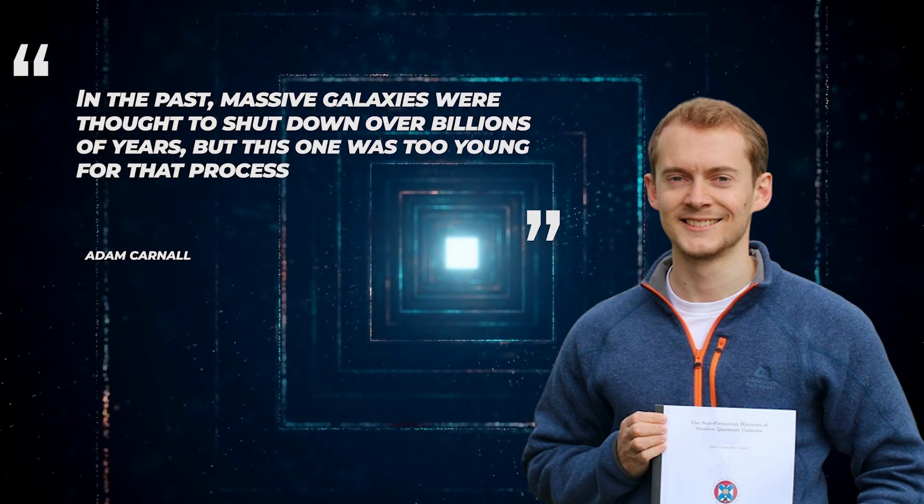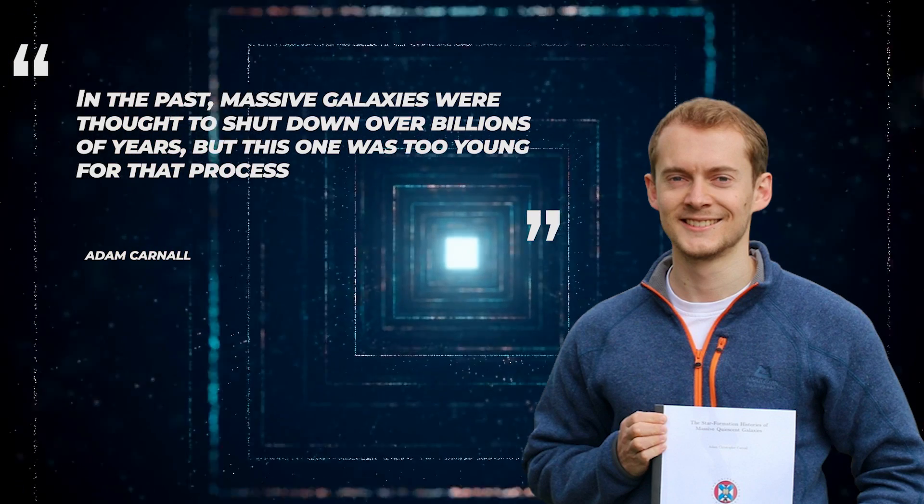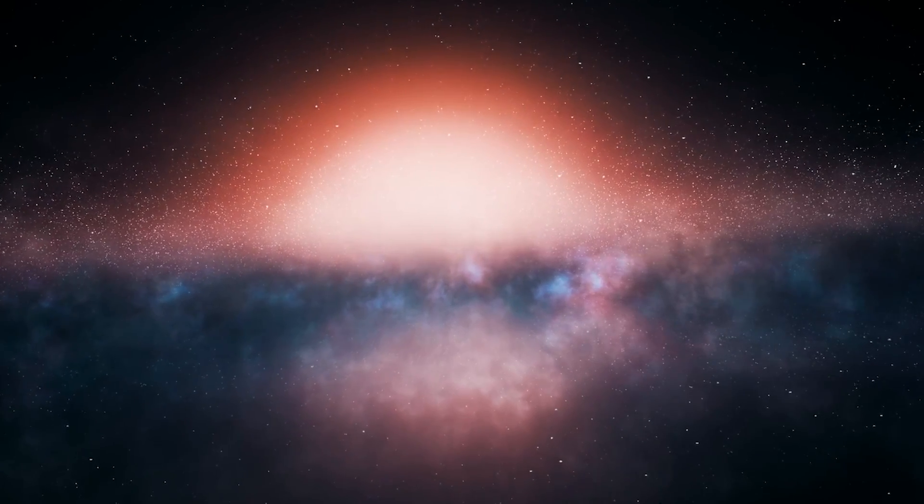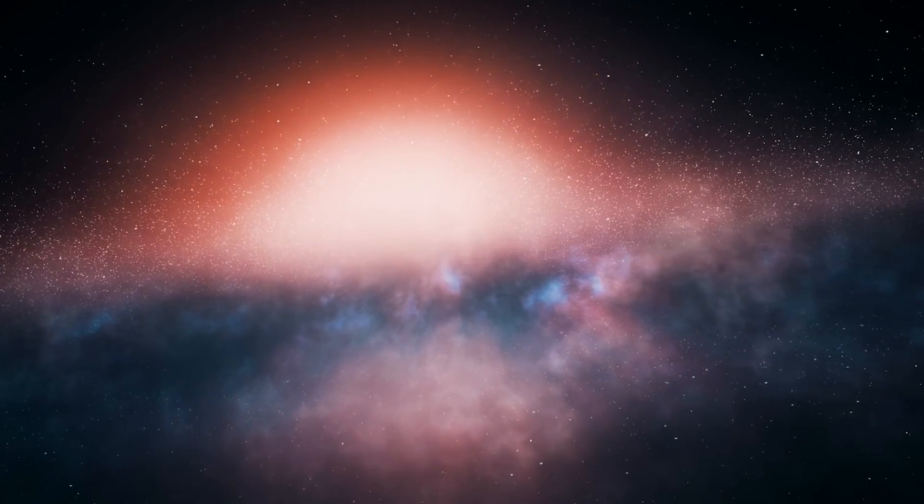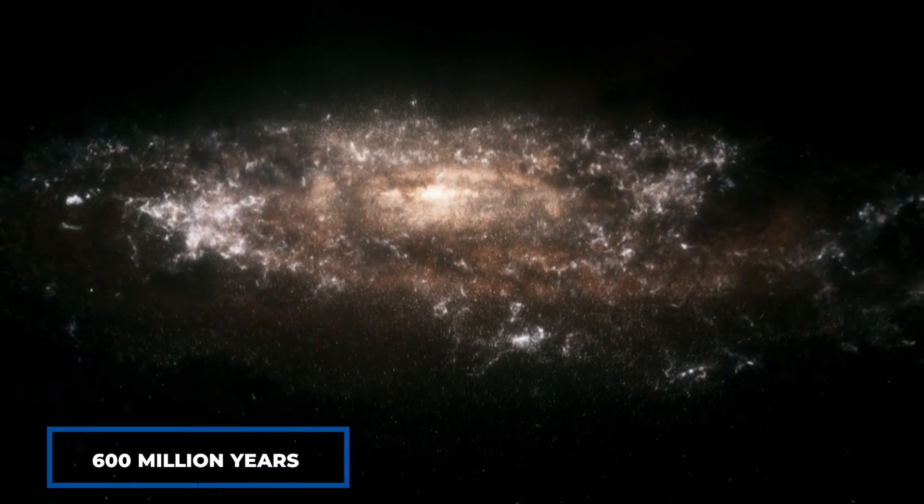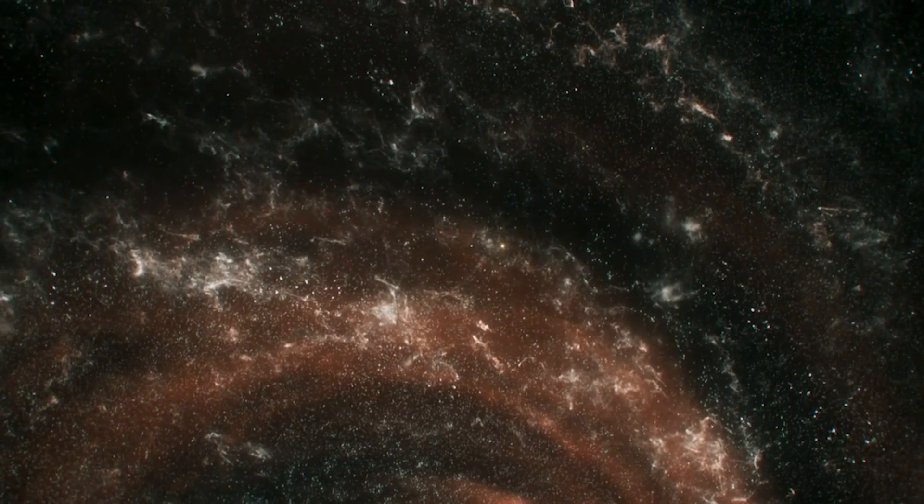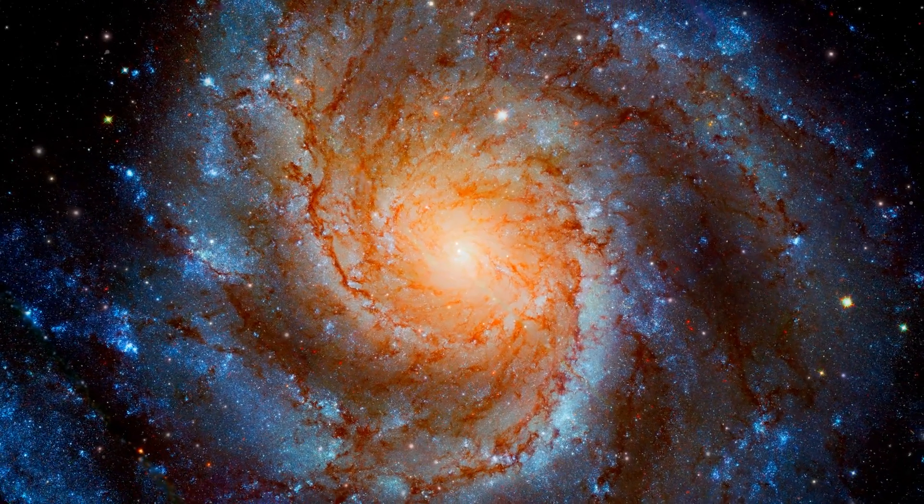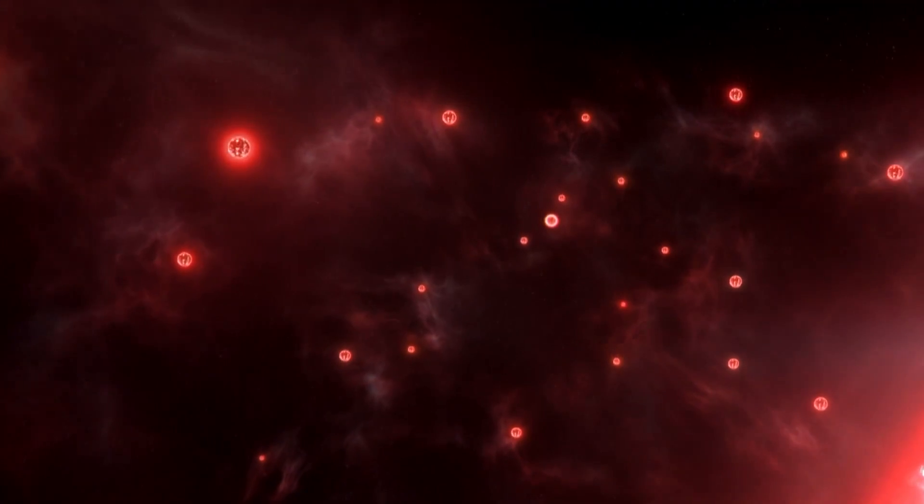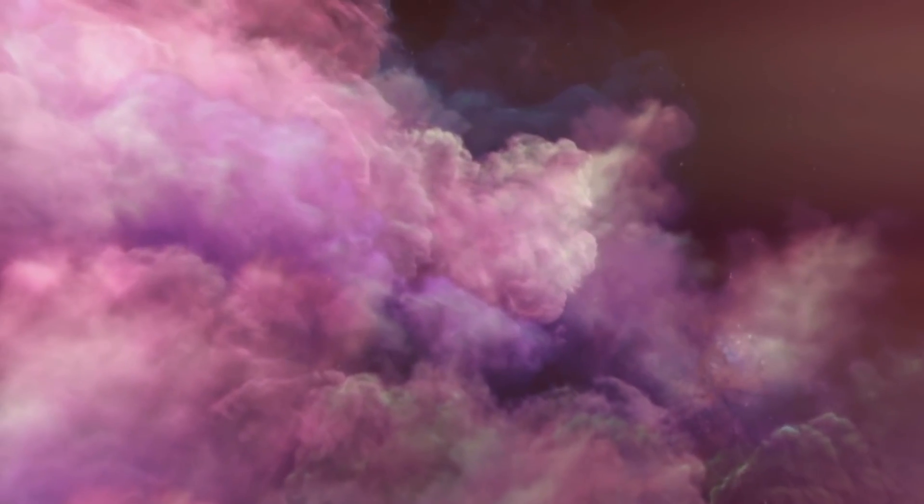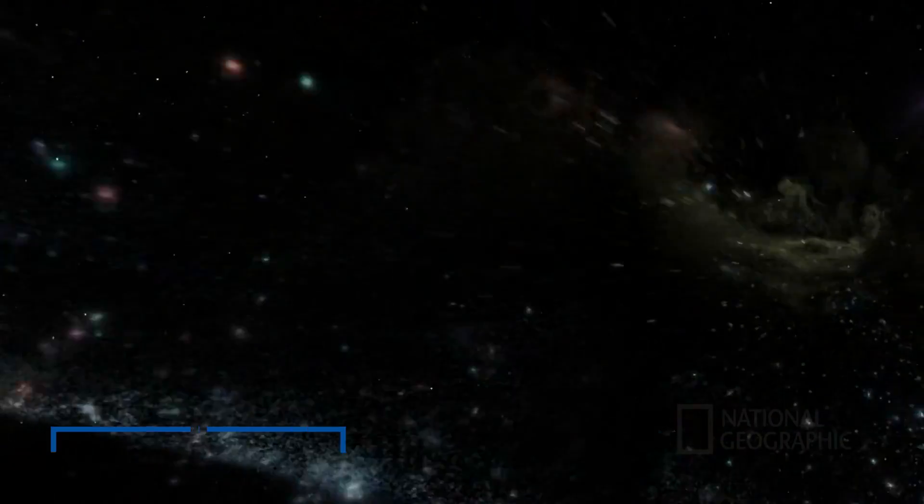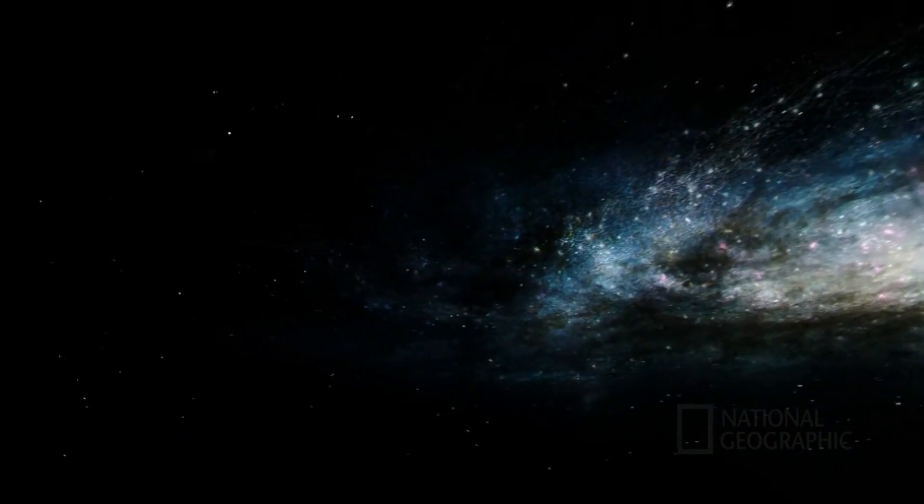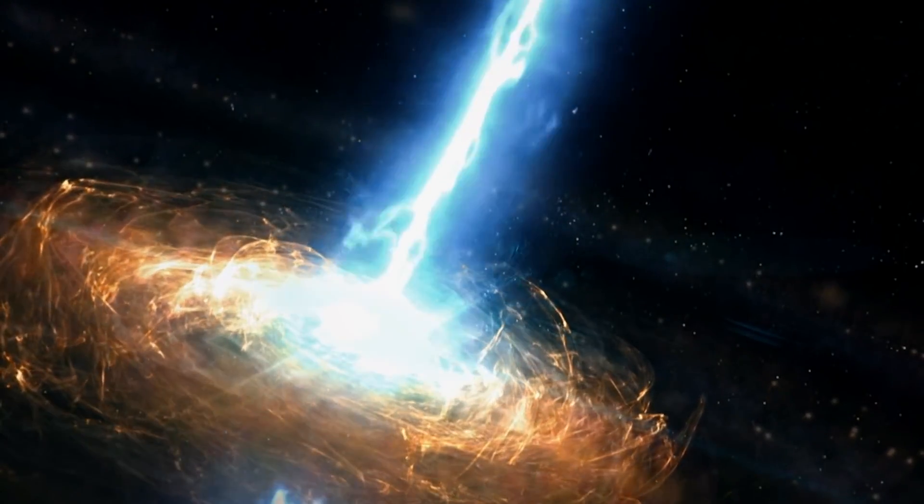In the past, massive galaxies were thought to shut down over billions of years, but this one was too young for that process. Studying GS9209 with the JWST revealed that this ancient galaxy had a spectacular start to life. 600 million years after the Big Bang, it burst into existence with an enormous burst of star formation, creating 40 billion solar masses worth of stars in just 200 million years, equivalent to the present-day Milky Way. The researchers attributed this burst to the giant gas clouds' rapid collapse and the turbulent conditions of the early universe. But abruptly, 800 million years after the Big Bang, GS9209 went quiet.